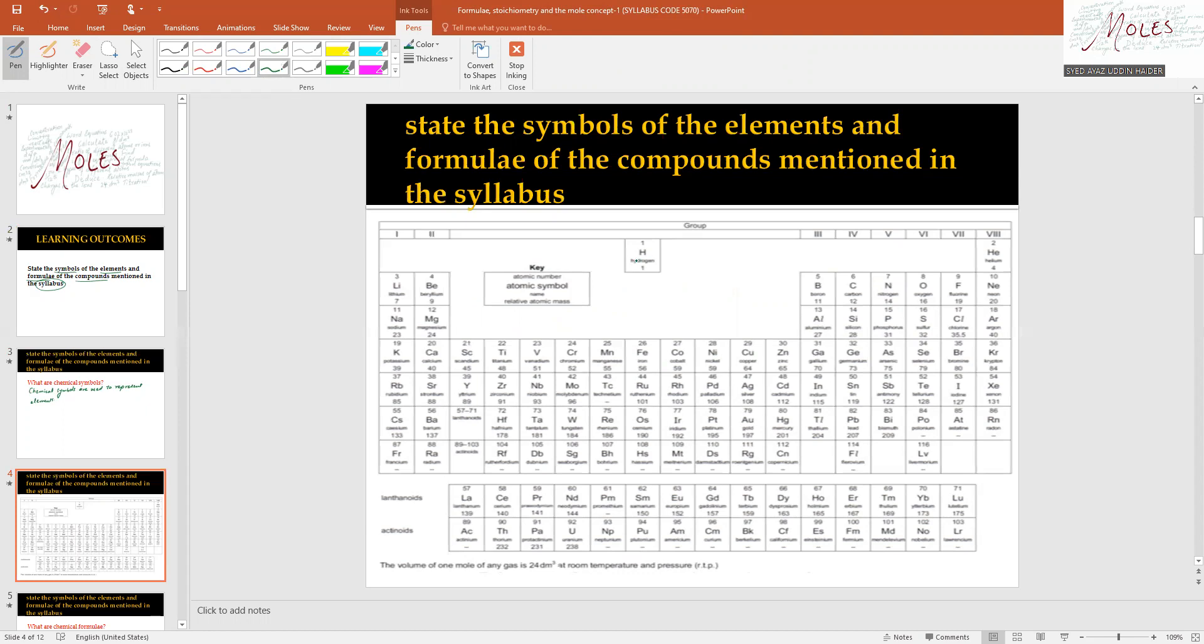Different elements have different symbols. For example, we have hydrogen element with symbol H. Oxygen has the symbol O.